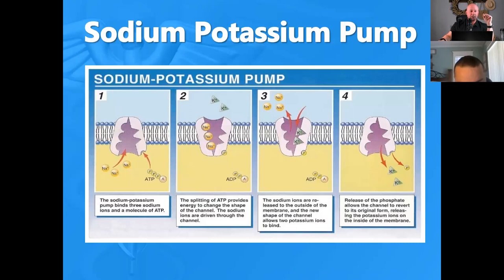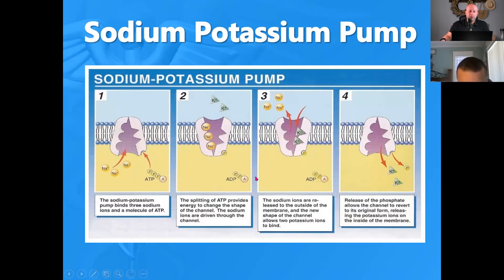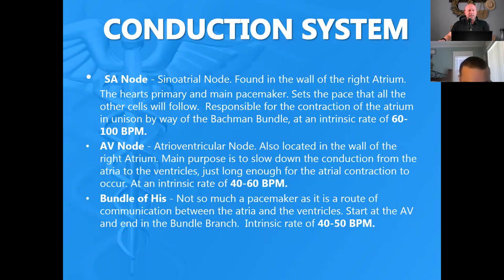The sodium-potassium pump: we need ATP binding onto the bridge to open it. Potassium has a higher affinity inside the cell; sodium has a higher affinity outside the cell. Marathon runners and triathletes take excess potassium because the theory is it makes muscles repolarize faster. When we get to the pacemakers of the heart, each pacemaker has its own set rate, and as one pacemaker goes out — because it's damaged or hypoxic — the next pacer down takes over.